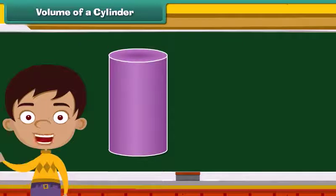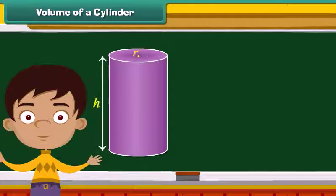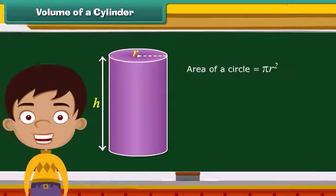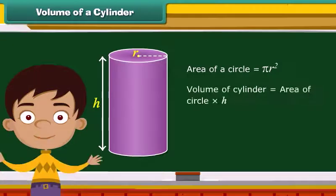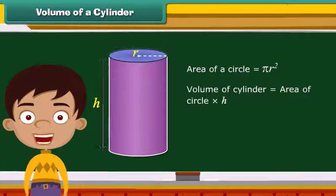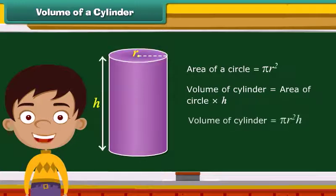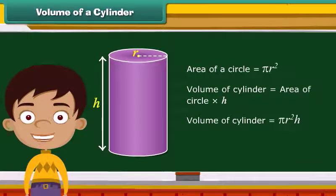A solid that has the shape of an ordinary tin can or a drum is a cylinder. The two bases of a cylinder are circular in shape. We know area of a circle is equal to pi R square. For calculating volume, we will multiply area of a circle with the height. So, the volume of a cylinder is equal to pi R square into H.